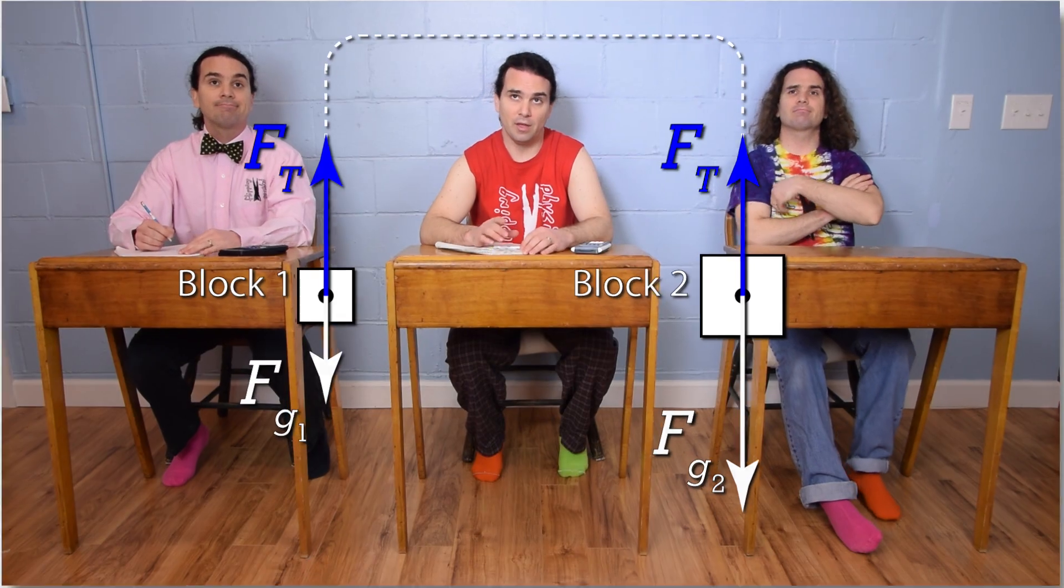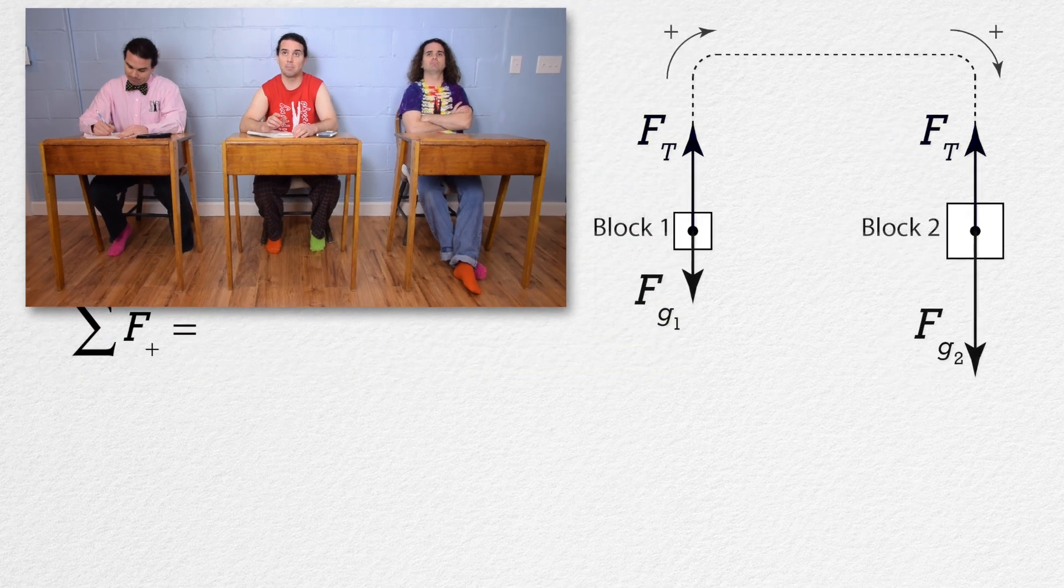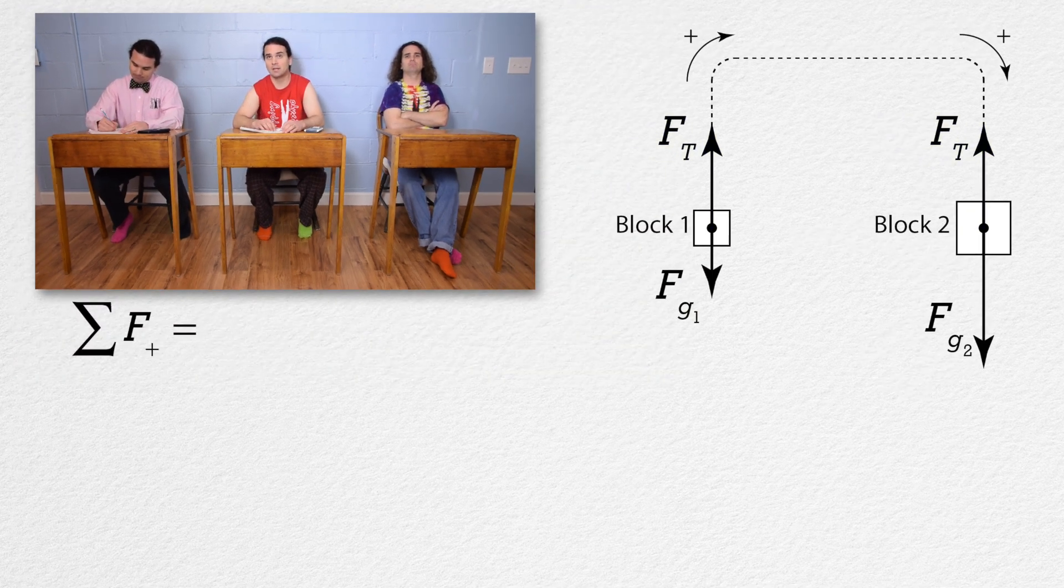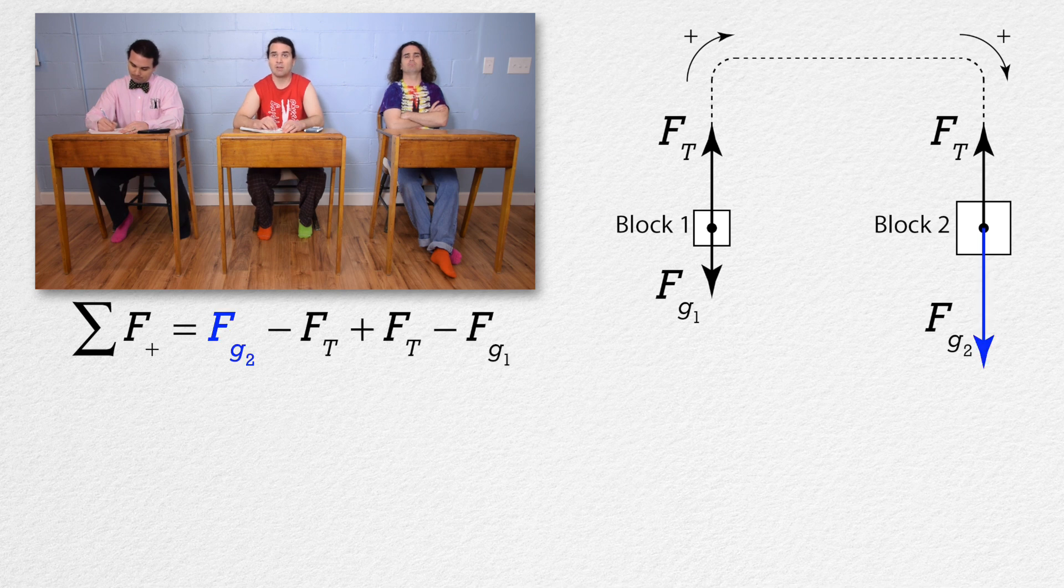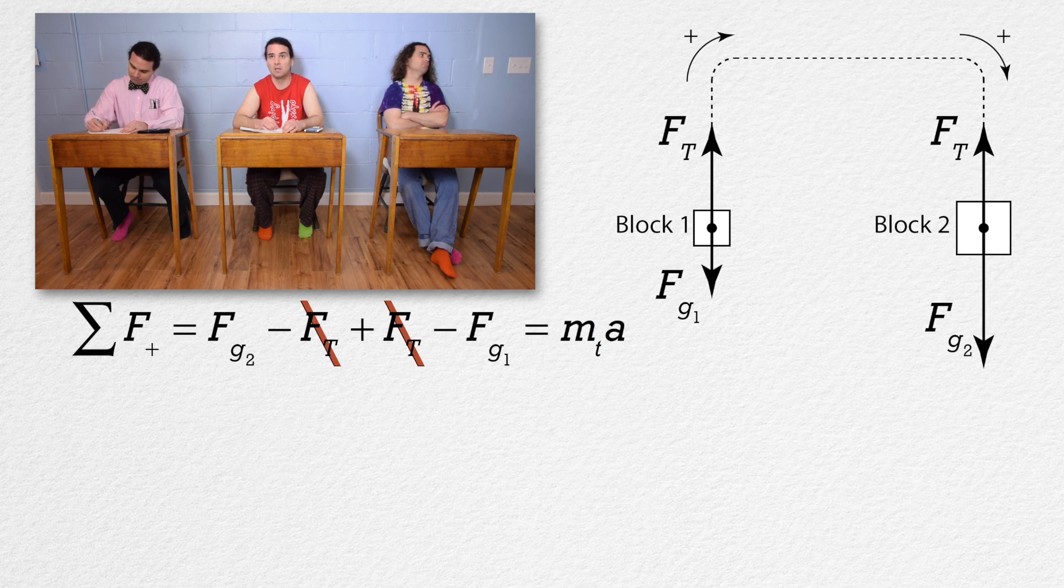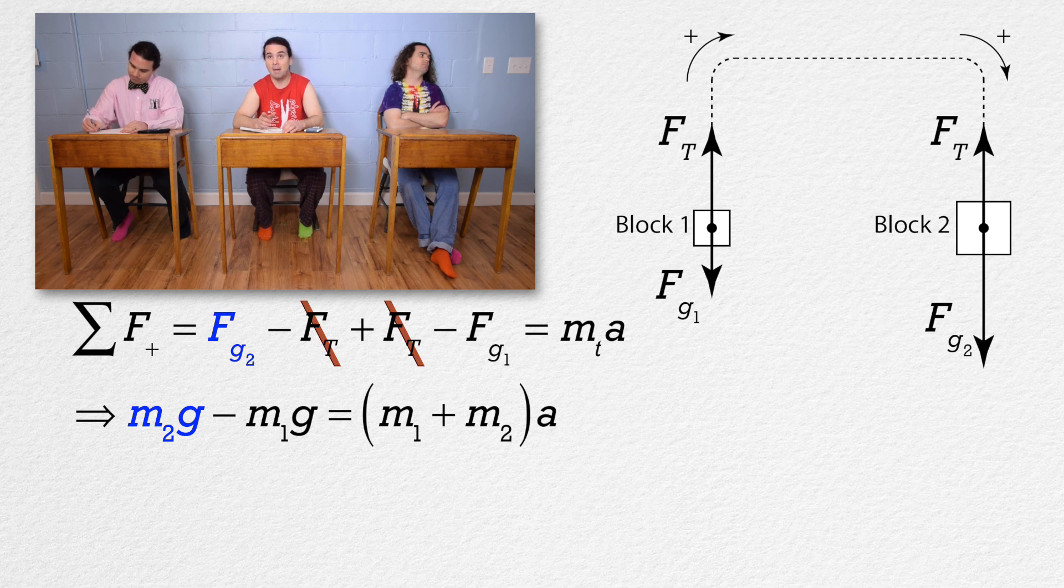Bobby, please? The net force on both blocks in the positive direction you just showed is positive force of gravity two minus force of tension plus force of tension minus force of gravity one and the net force also equals mass times acceleration which would be the total mass times the acceleration of both blocks. The two tension forces cancel one another out and we can substitute in mass two times acceleration due to gravity for force of gravity two, and mass one times acceleration due to gravity for force of gravity one, and mass one plus mass two for the total mass.